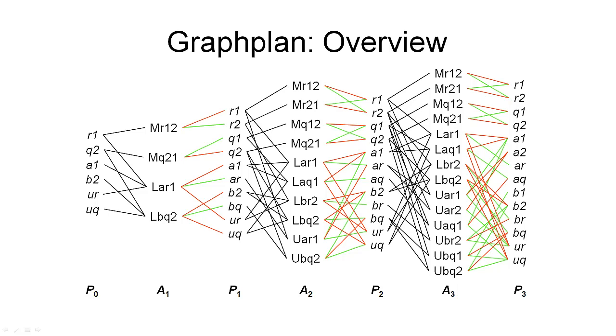The graph plan planner addresses the same planning problem as the strips planner or UCPOP. That is, the planning problem consists of a set of operators constituting a domain, an initial state, and a set of goals that need to be achieved.